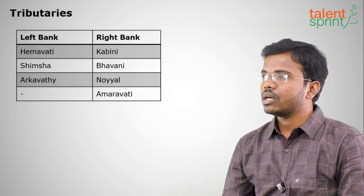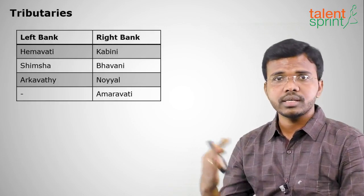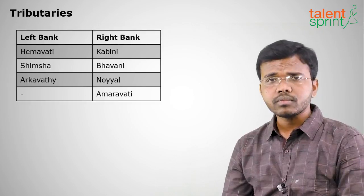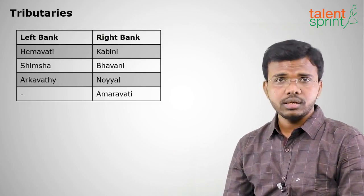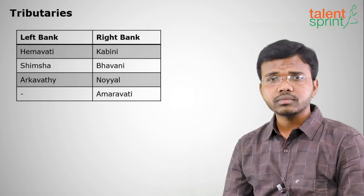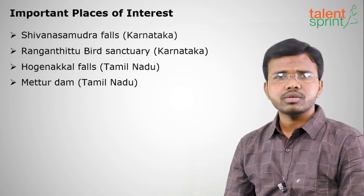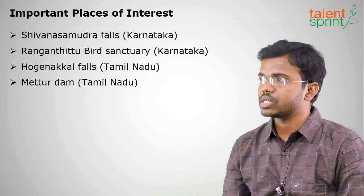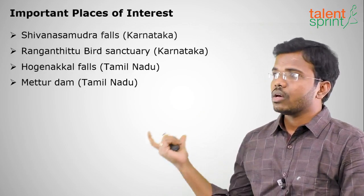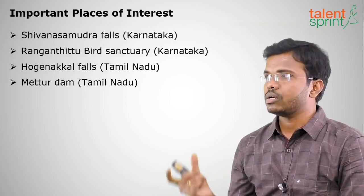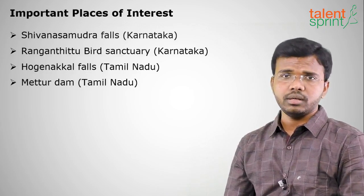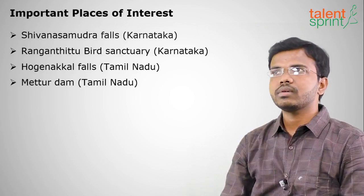Left bank tributaries of the Kaveri are Hemavati, Shimsha, and Arkavati. Right bank tributaries are Kabini, Bhavani, Noyal, and Amaravati. Important places of interest along the Kaveri include Shivanasamudra Falls in Karnataka, Ranganatittu Bird Sanctuary in Karnataka, Hogenakkal Falls in Tamil Nadu, and Mettur Dam in Tamil Nadu.